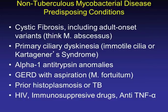Predisposing conditions to NTM disease include cystic fibrosis — think about M. abscessus — and other genetic or structural disorders such as primary ciliary dyskinesia, Kartagener syndrome, and alpha-1 antitrypsin anomalies. GERD is a significant factor, as are prior TB or histoplasmosis due to anatomic lung changes. Patients on TNF-alpha blockers, immunosuppressive drugs, and those with HIV are also predisposed to develop NTM.